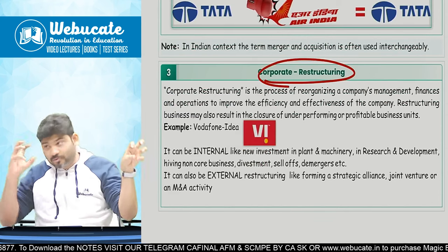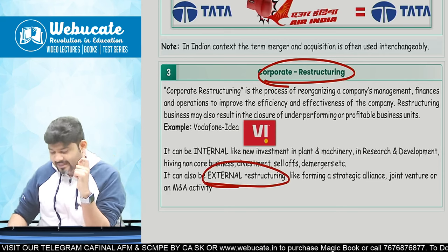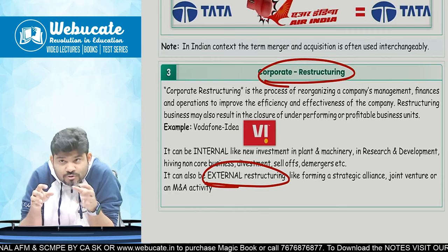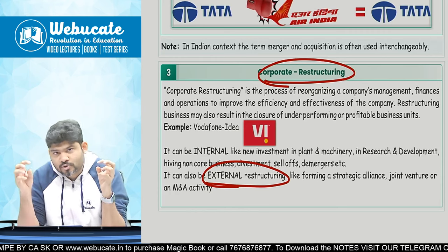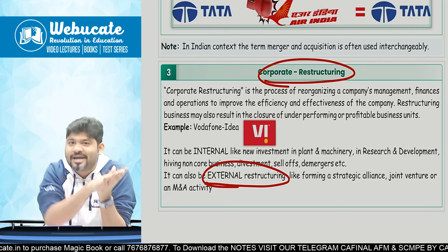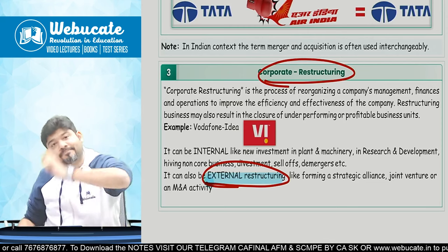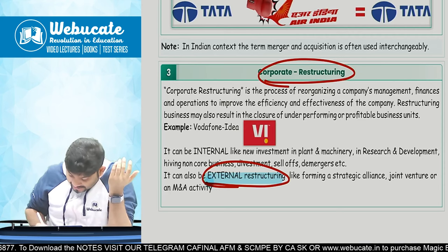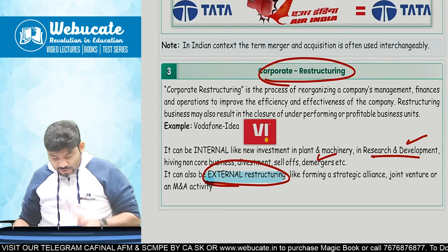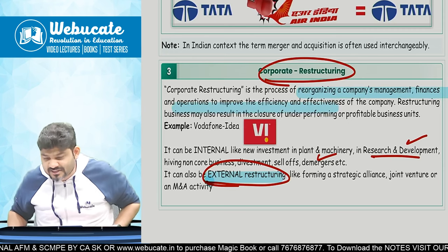Corporate restructuring is what happened with Vodafone — from Orange to Hutch to Vodafone, to the Vodafone-Idea merger. They also did an external restructuring with the Government of India regarding AGR dues. Vodafone India owed approximately 50,000 crores to the government; instead of paying cash, they gave equity shares, so today the Government of India is a shareholder of Vodafone India. Corporate restructuring is the process of reorganizing a company's management, finances, and operations to ensure efficiency and effectiveness.